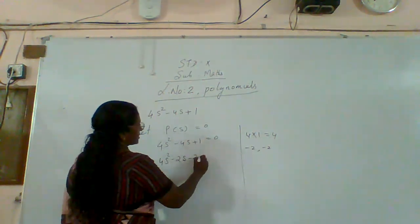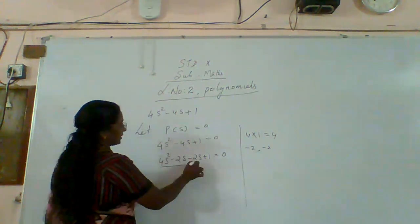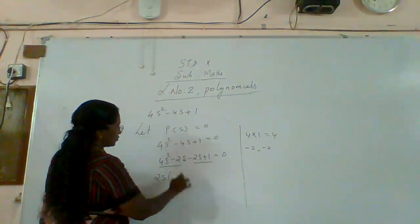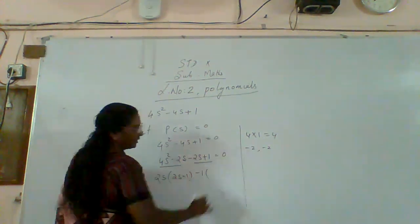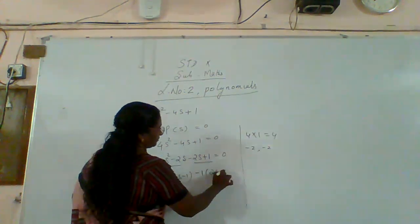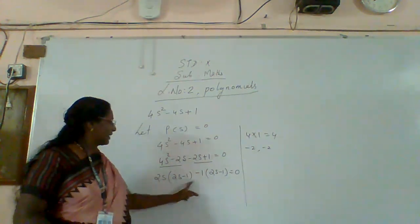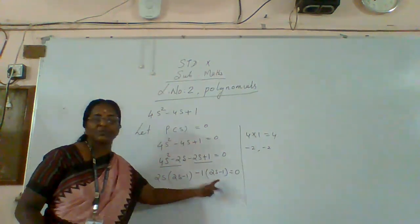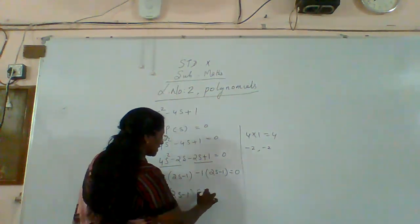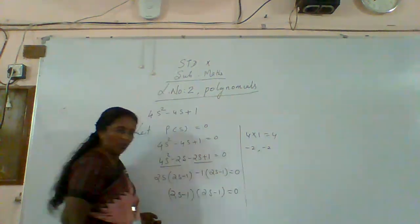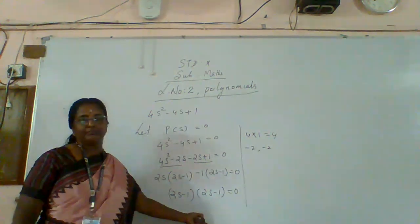So that is equal to four s square minus two s minus two s plus one equal to zero. From this, factor out two s: two s into two s minus one, and here take minus one common outside, giving two s minus one. Therefore each factor — the factors are the same.